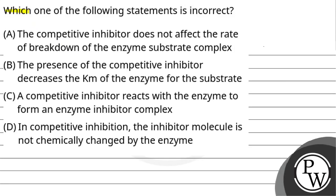Hello students, let's see this question. Which one of the following statements is incorrect? (A) The competitive inhibitor does not affect the rate of breakdown of the enzyme-substrate complex. (B) The presence of the competitive inhibitor decreases the Km of the enzyme for the substrate. (C) A competitive inhibitor reacts with the enzyme to form an enzyme-inhibitor complex. (D) In competitive inhibition, the inhibitor molecule is not chemically changed by the enzyme.